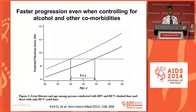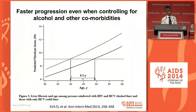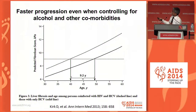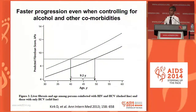This is best illustrated in the Johns Hopkins cohort, where they modeled fibrosis progression in mono-infected versus co-infected patients. Controlling for everything else, a co-infected patient with a fibrosis score of 9 will be 10 years younger than a mono-infected patient with the same fibrosis score — demonstrating the accelerated fibrosis we see in our group of patients.